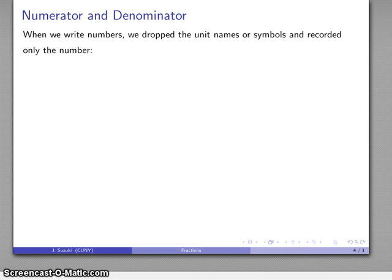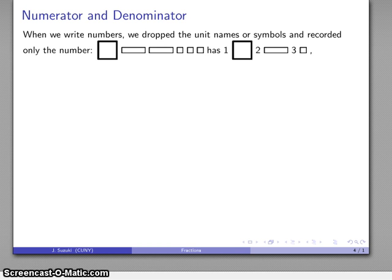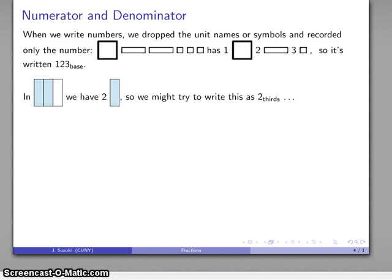Now when I go to write that amount, when we write numbers we drop the unit names or symbols and record only the number. So here I have this thing. I might as my intermediate step note that I have one of these, two of these, three of these - one, two, three - and then I'll drop those symbols out. I have 123 in whatever base. So in my final written form I don't have any of my concrete symbols there. I'm going to do exactly the same thing with fractions.